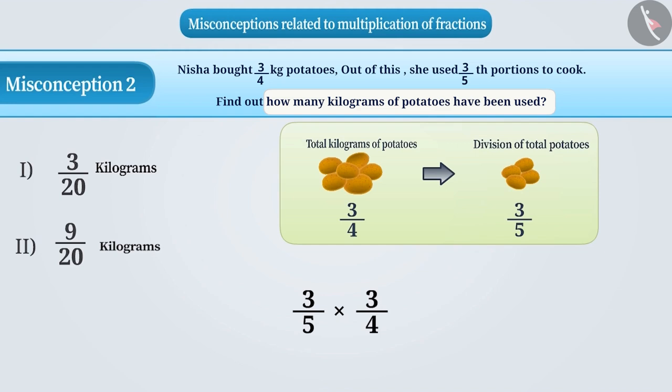For this, we multiply the numerators and get the numerator of the result as 9. Similarly, we multiply denominators and get the denominator of the result as 20. Therefore, the correct result is 9 by 20 kg.